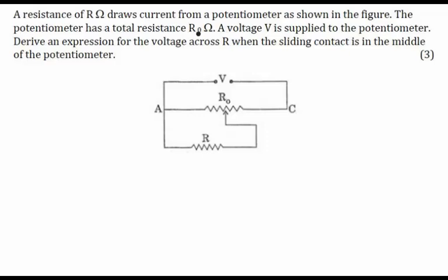The potentiometer has a total resistance of R0 ohm, a voltage V is supplied to the potentiometer, and we have to derive an expression for the voltage across this resistance.